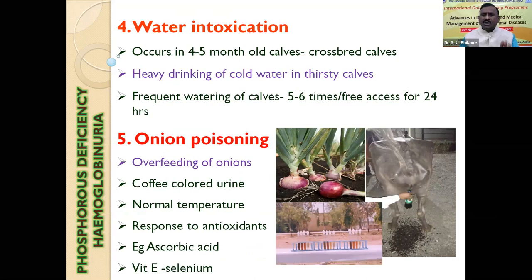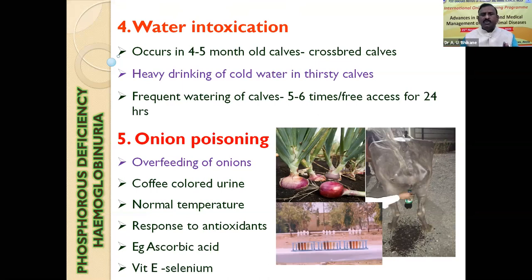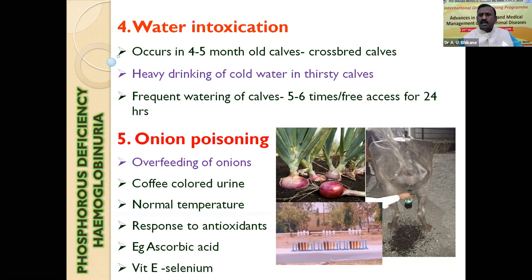Water intoxication does not occur in adult animals — in adult cows and adult animals, there is no question of water intoxication. But if there is red urine in calves, we should think of this possibility. Water intoxication affects calves of about eight months old, especially in crossbred calves. Some calves drink a huge amount of water, leading to water toxicity. This can be prevented by providing water access five to six times a day rather than free access for 24 hours.